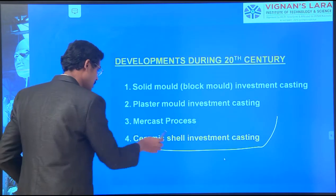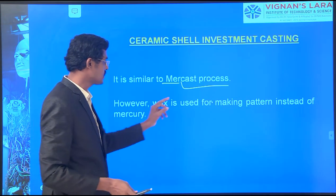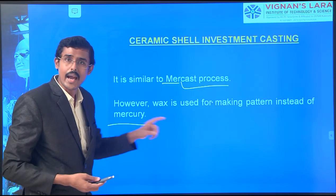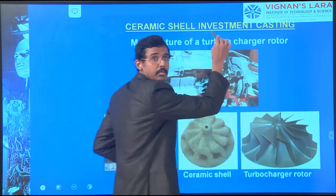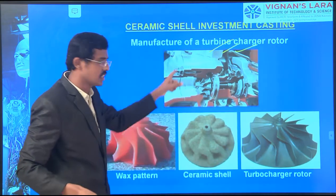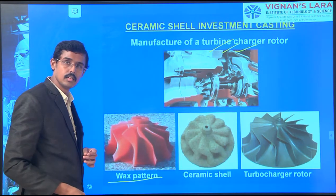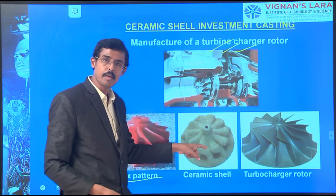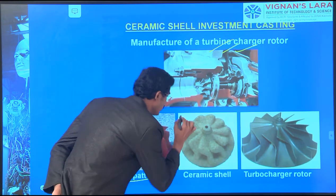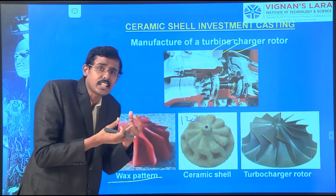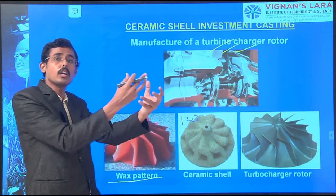The development returns and we move to ceramic shell investment casting - the main important one. It is very similar to the Mercast process. However, wax is used for making the pattern instead of mercury. This is what we have to see in eight steps. The manufacturing of turbine components - every step is there. These are complex designs we are making. The wax pattern is prepared, and then the ceramic shell is molded four to five times.